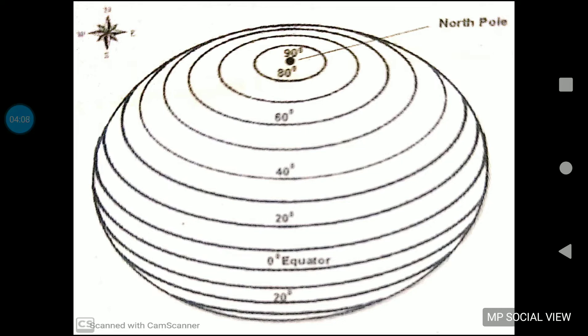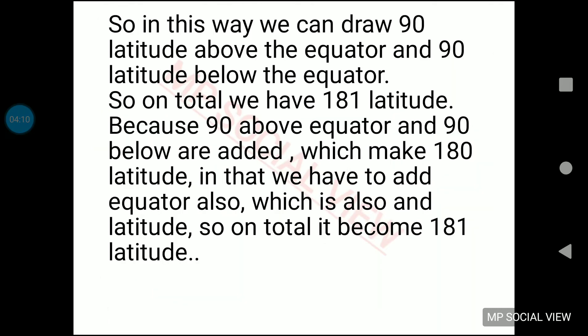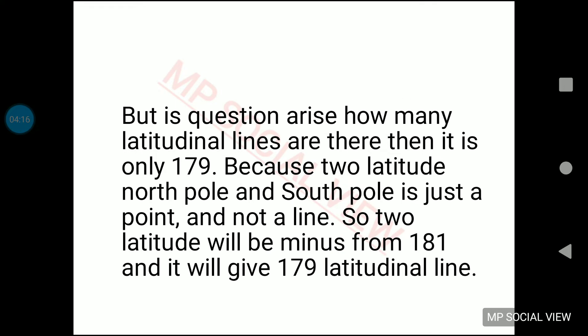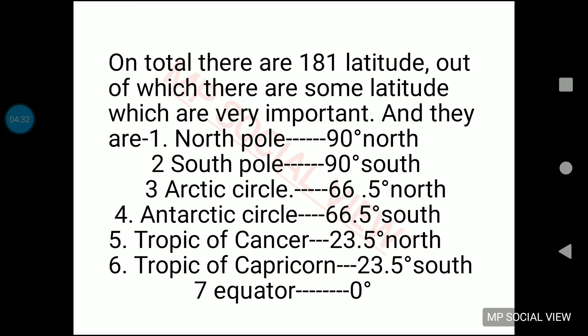Please note carefully what question is being asked in the exam — whether they are asking how many latitudes there are, or how many latitudinal lines there are. If they ask how many latitudes, the answer is 181. If they ask how many latitudinal lines, the answer is 179, which is 181 minus 2. Next, let's see what the important latitudes on earth are.